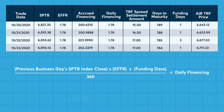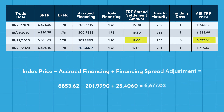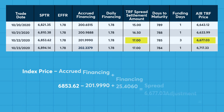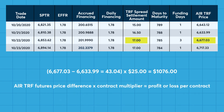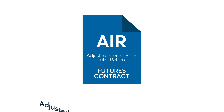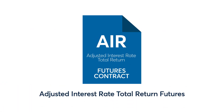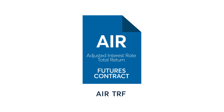If the TRF spread settled at 17, the AIR TRF price would now be 6,677.03. The additional change in contract value from the previous day's settlement is 43.04 multiplied by $25, equaling $1,076. We've seen how the TRF spread is the traded component in the AIR TRF contract.